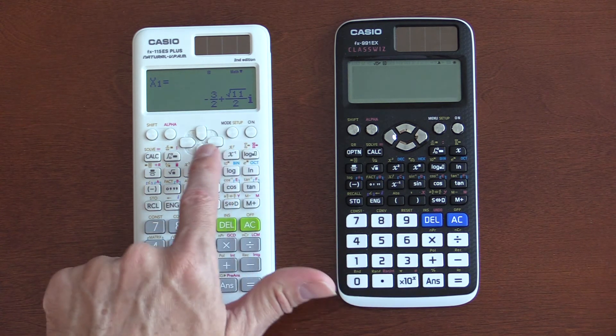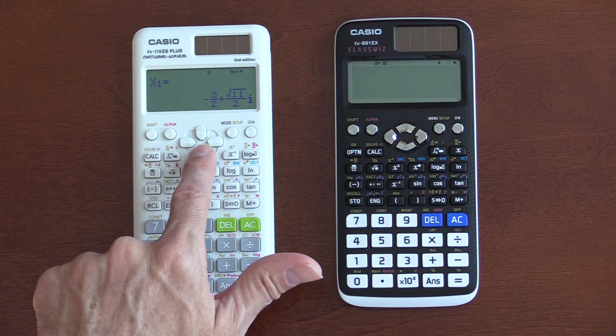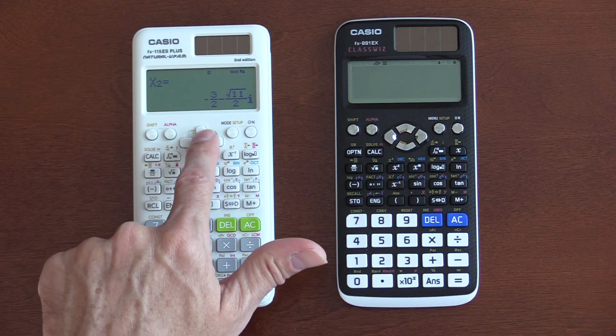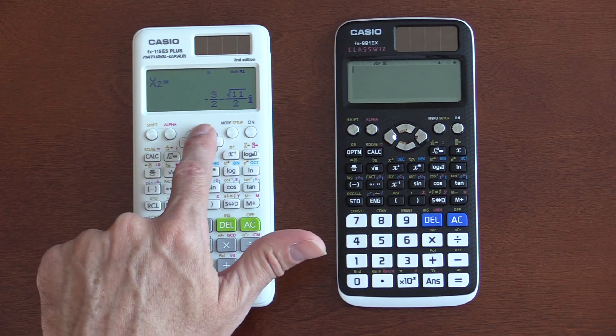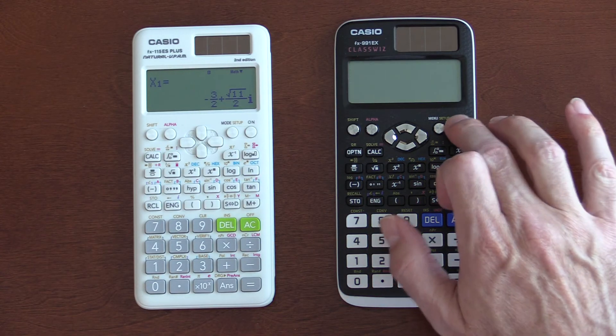I like that the Casio gives an exact answer like that. Most calculators give a decimal. If I hit the down arrow, I get my other result. Equal. And, let's do the same thing on the EX.